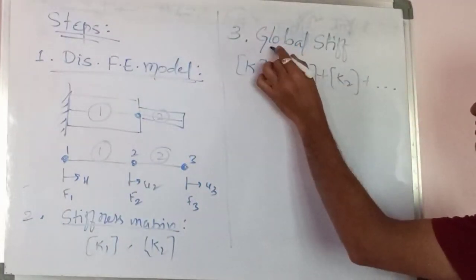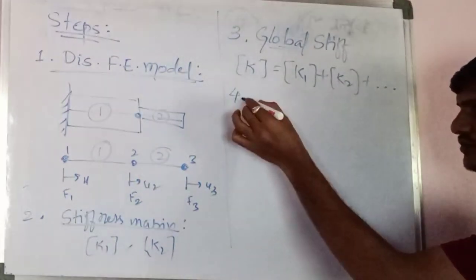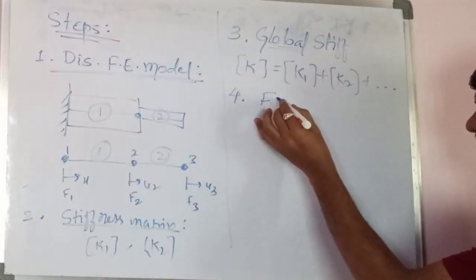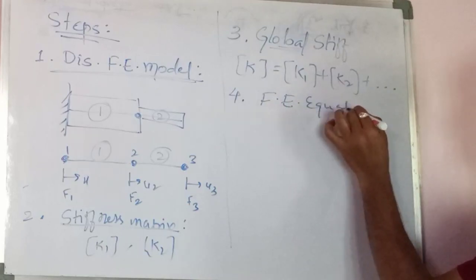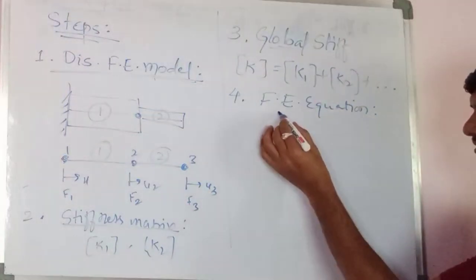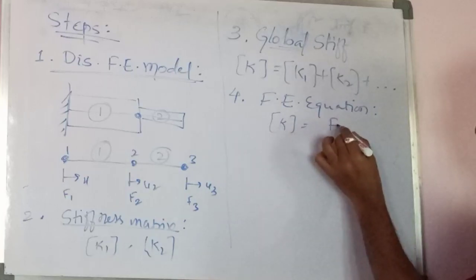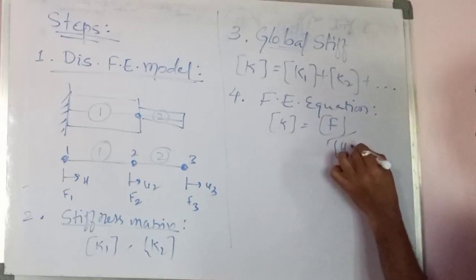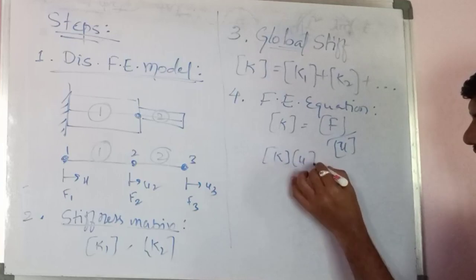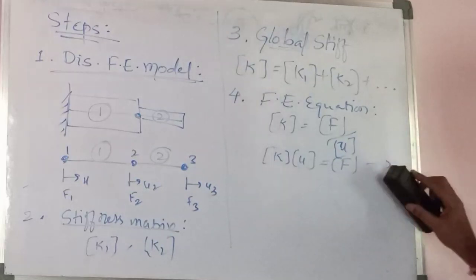The fourth step is the formation of the finite element equation. The formation is where K·U = F — stiffness matrix times displacement equals force. This equation, K·U = F, is the finite element equation.